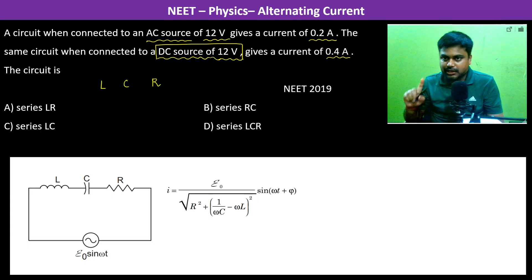If capacitance was there, if it is a capacitance, then DC source connected to an AC source, there would have been no current. Therefore, that means this is not present.